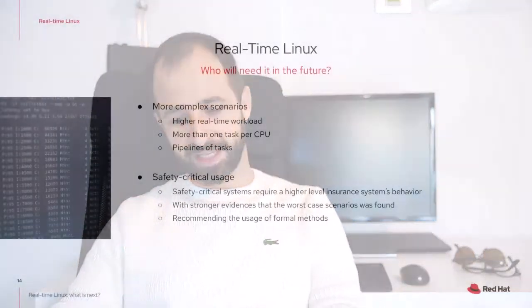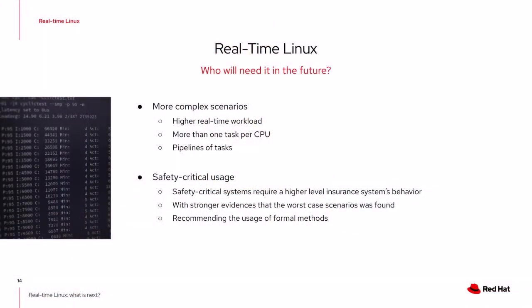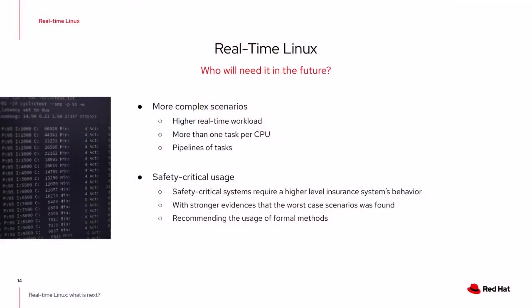We can also run real-time Linux with KVM, providing fast response times for external events on guest virtual machines. Generally these use cases require just a few real-time tasks, typically one per CPU, but they are pushing us toward more complex use cases requiring not only faster response for the highest-priority thread but deterministic response for a set of tasks — a pipeline of tasks — with synchronization among tasks across many CPUs. The usage of real-time Linux on safety-critical systems also requires not only that the system can do it, but that we can explain why.